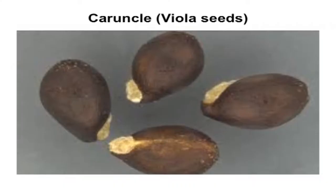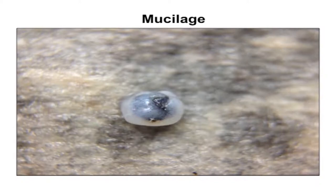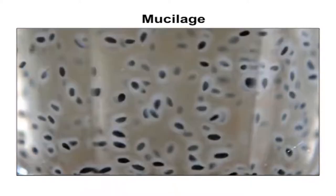Caruncle is a reduced aril. It is a fleshy outgrowth present near the hilar region of some crops, especially seeds belonging to the family Euphorbiaceae. It is generally dull colored, but can be brightly colored in some crops. Caruncle can be seen in castor. Some seeds have mucilage. Mucilage is a layer of polysaccharide slime produced by some seeds upon imbibition. This serves to retain water during imbibition and germination. Anise seed is one such seed which is used in sharbat with mucilage.